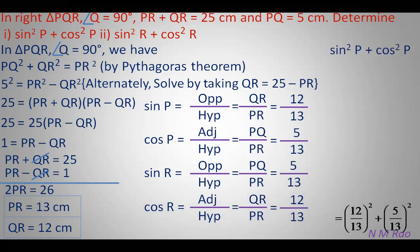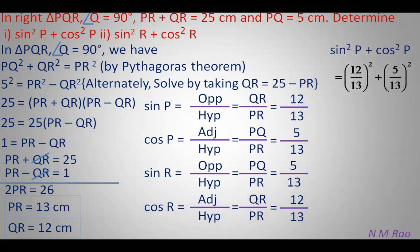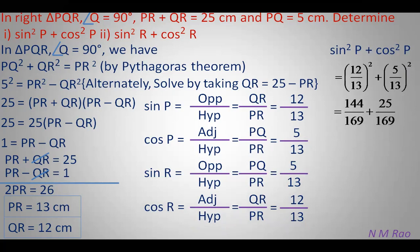Now we find sin²P plus cos²P. Sin P is 12/13, so sin²P is 144/169. Cos P is 5/13, so cos²P is 25/169. Adding: (144+25)/169 equals 169/169 equals 1. Similarly, sin²R plus cos²R equals (5/13)² plus (12/13)² equals 25/169 plus 144/169 equals 169/169 equals 1.